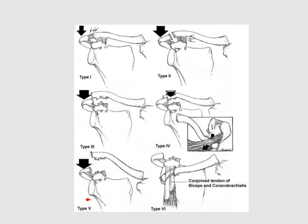Type 5 will have a marked upward deviation of the clavicle. To differentiate between type 3 and type 5: in type 3, we have total tearing of both the acromioclavicular and coracoclavicular ligaments with some degree of upward deviation of the clavicle, but it is not marked. In type 5, we have a marked displacement of the clavicle — it is too far from the coracoid process.